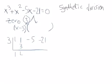And you just basically keep doing that process of multiplying. Four times three is 12. And then adding. Negative five plus 12 is seven.